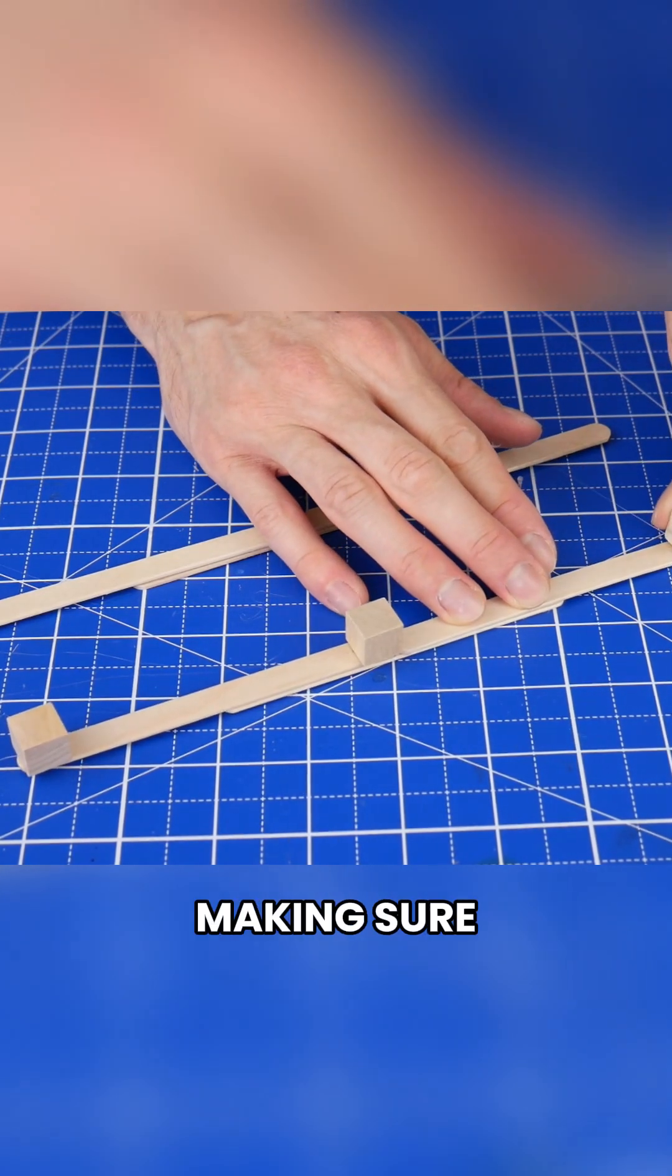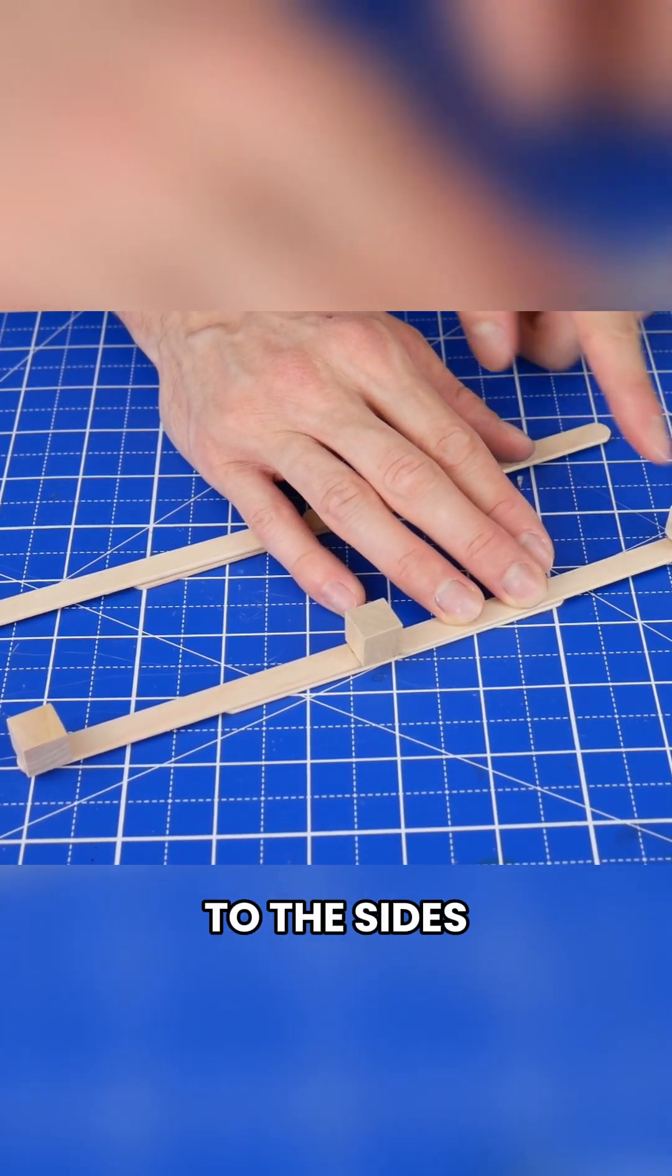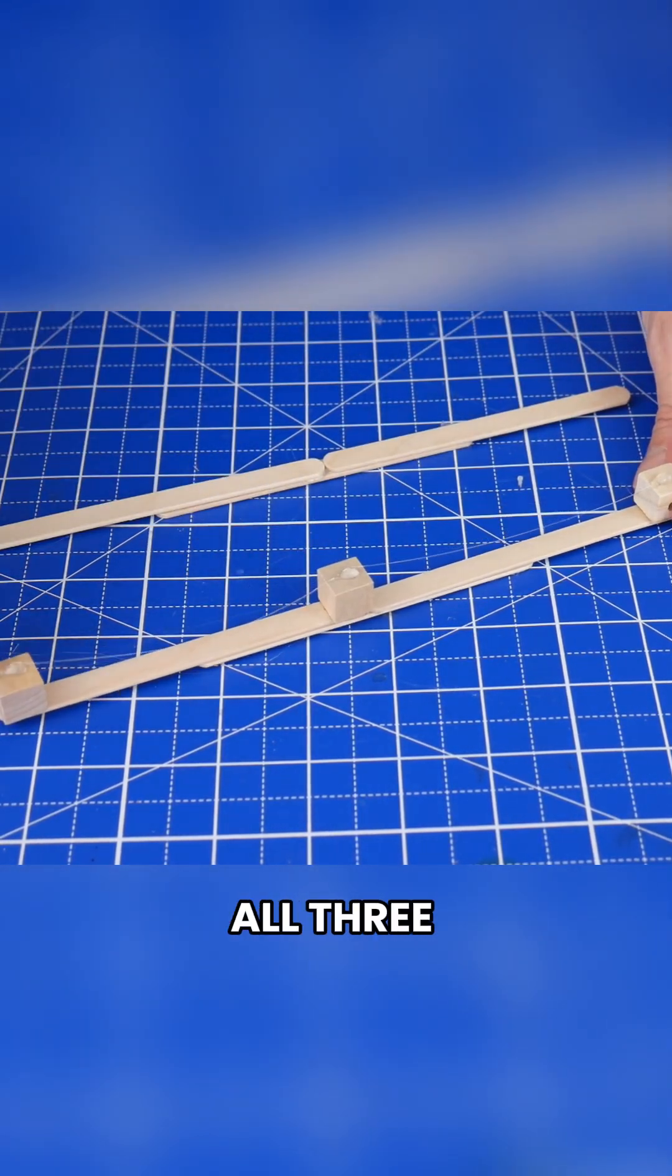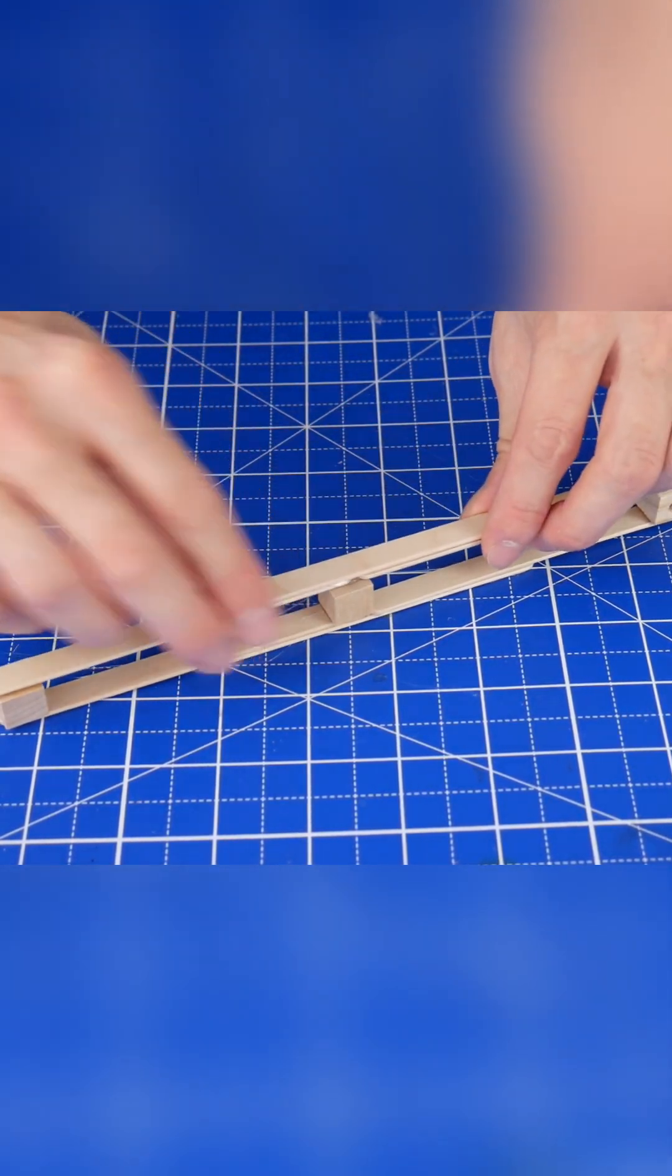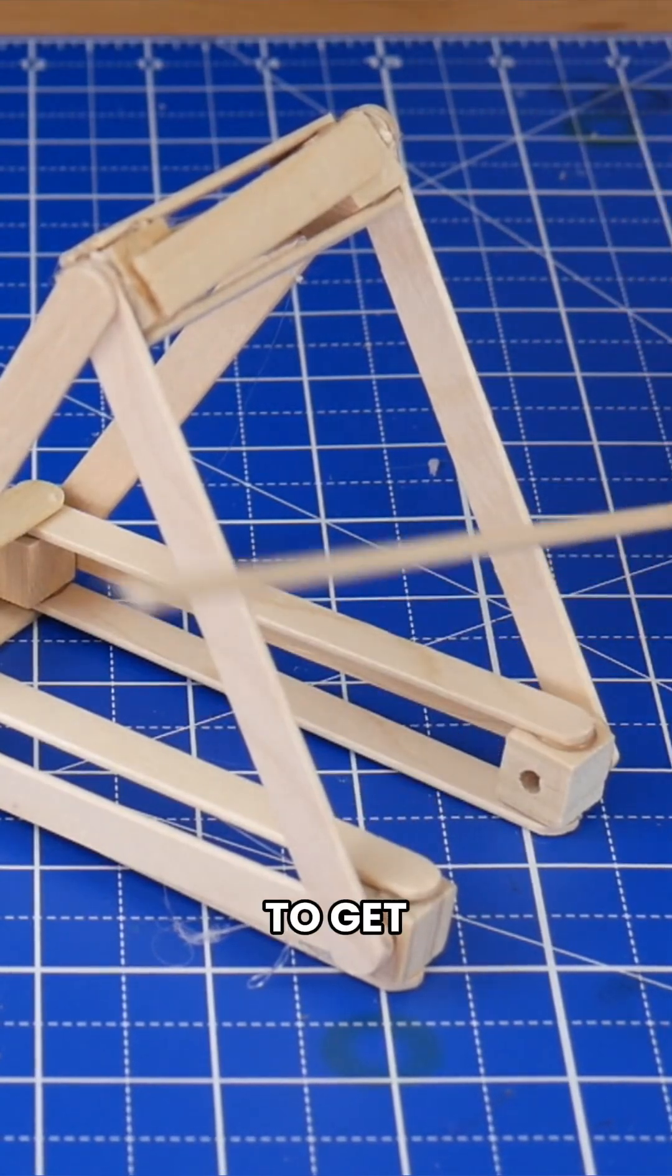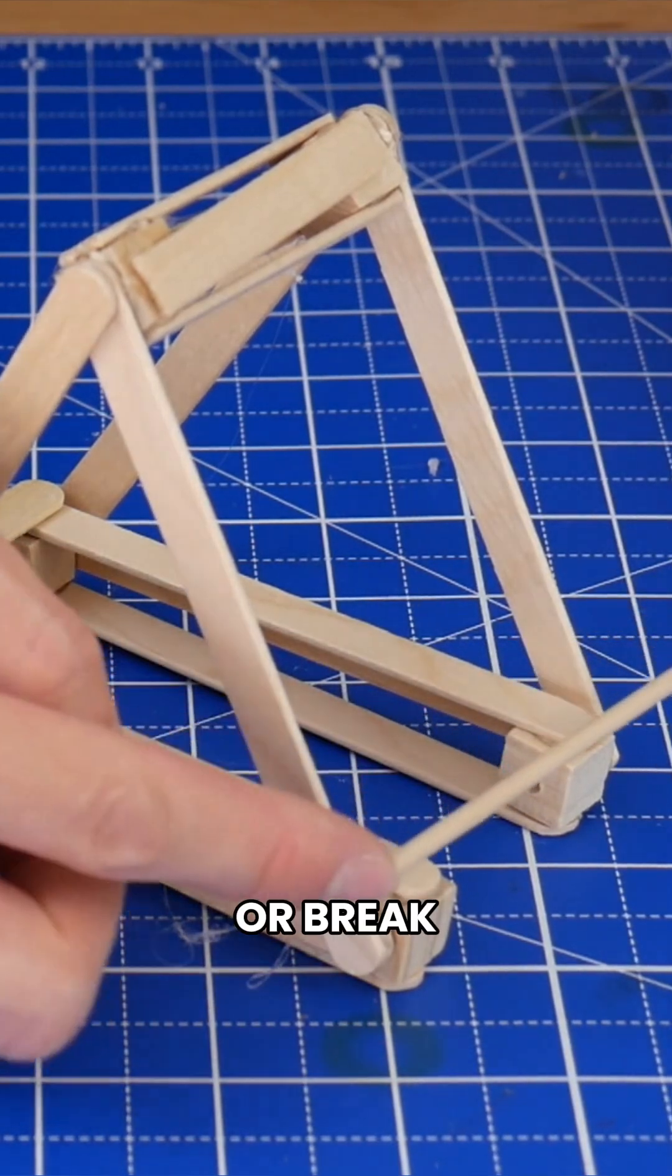Make sure the holes are pointing off to the sides of the beam. Then glue the other beam on top of all three of those cubes. Okay, to install the arm onto the rest of the catapult, we first need to get a thin dowel and cut or break it to size so that it's the same width as the base.